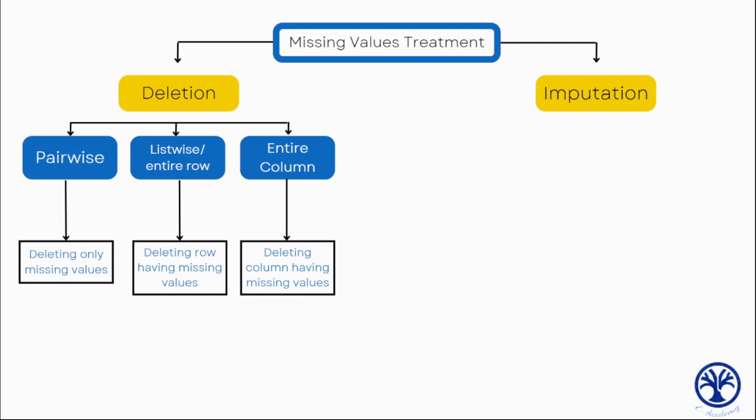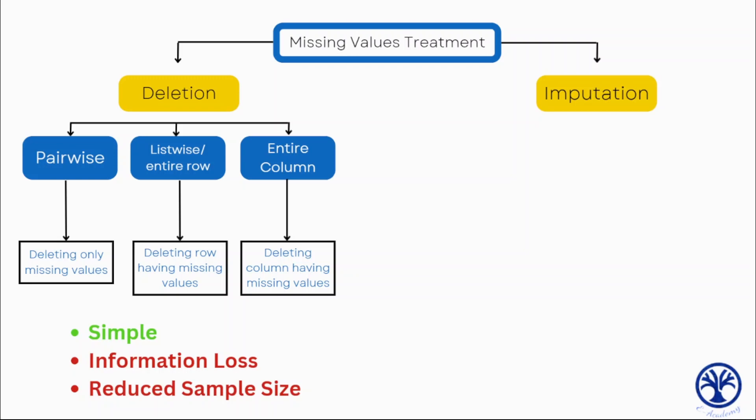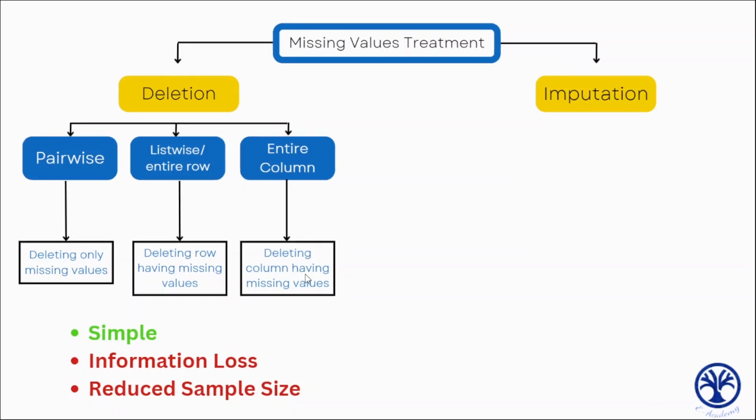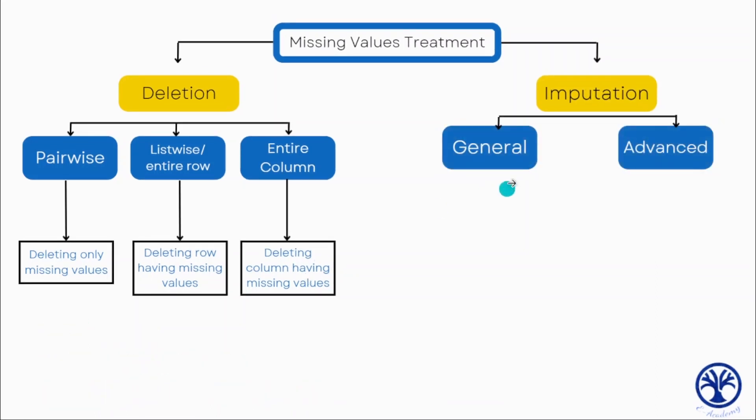All in all, deleting missing data involves removing any observations or variables with missing values. This method is simple but can lead to loss of information and reduced sample size. It is typically used when the amount of missing data is small or when the missing data is not at random. On the other hand, with imputation we can have general approaches as well as advanced approaches.